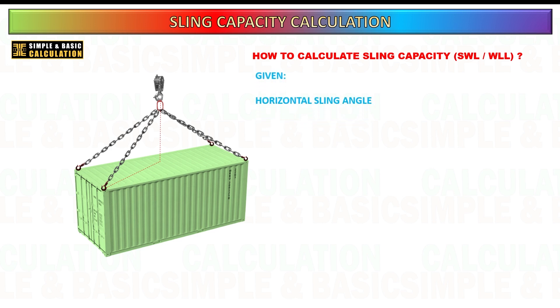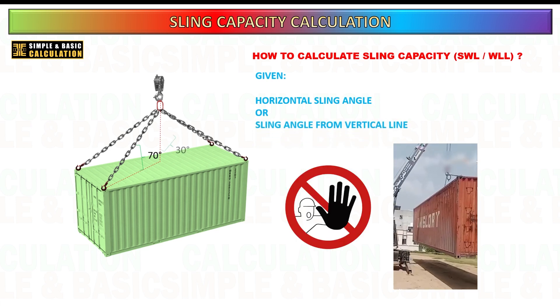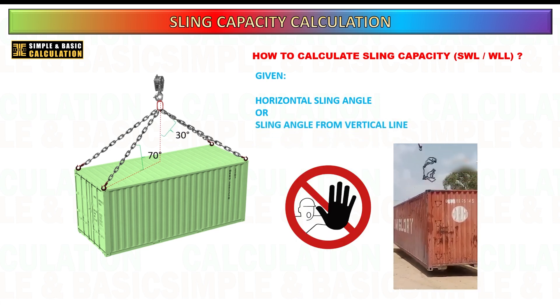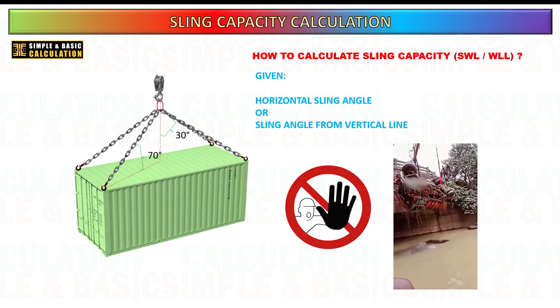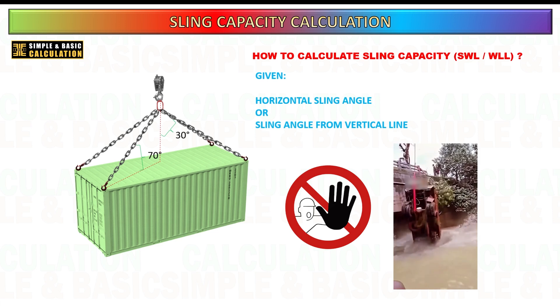In the specific example we will examine, the only variable provided is the sling angle, which is defined as either horizontal or vertical. In this context, understanding the reduction factor is essential for accurately determining the effective load capacity of the sling based on its angle of orientation.